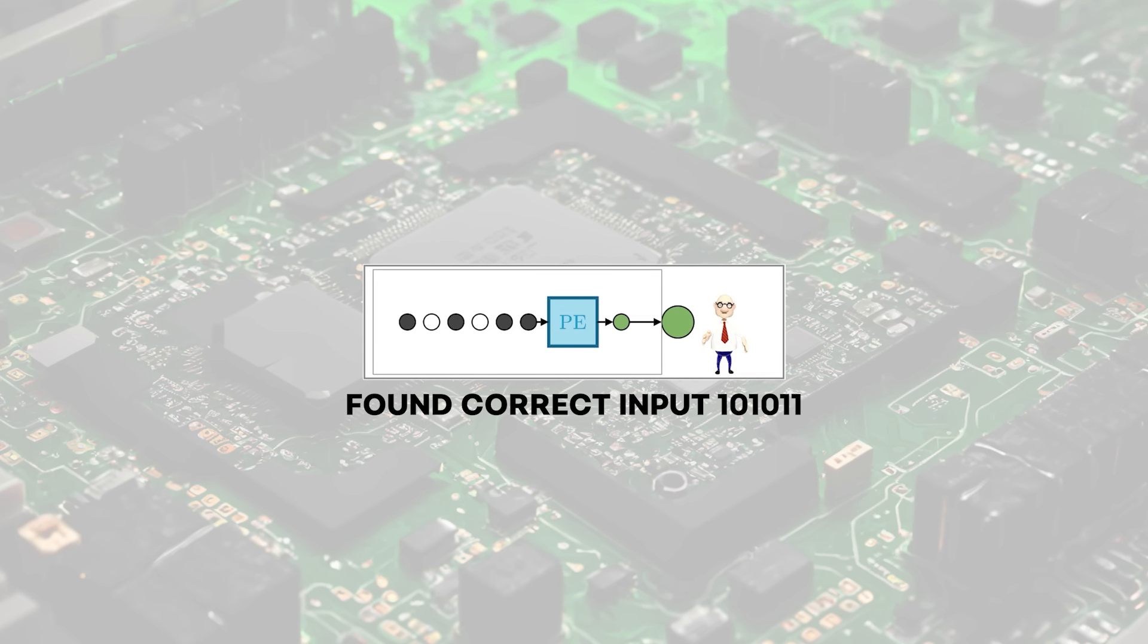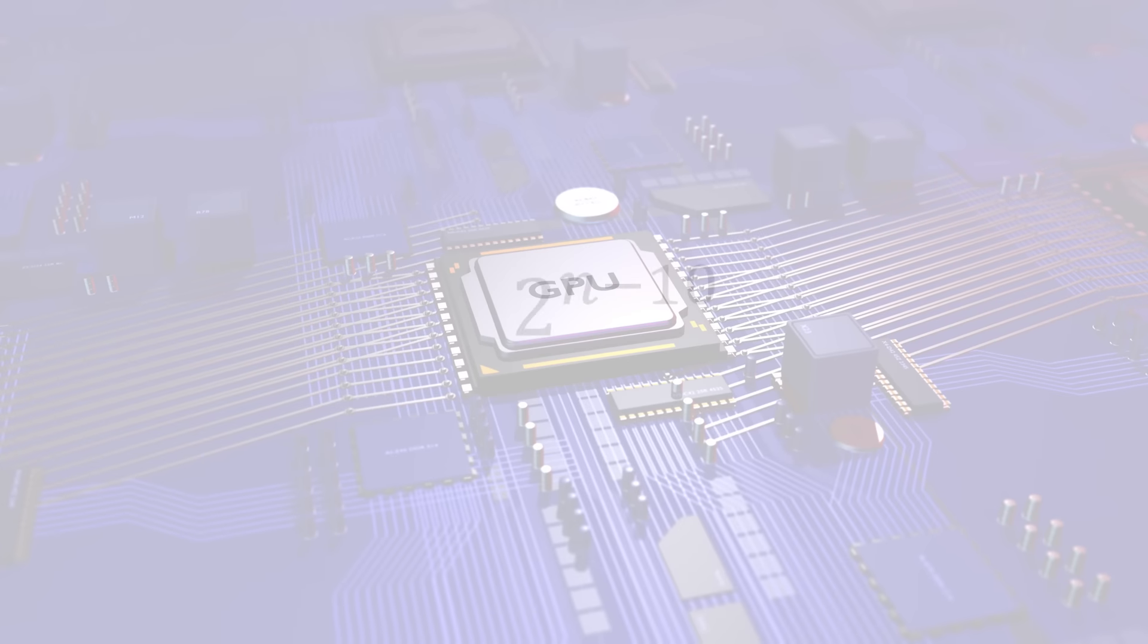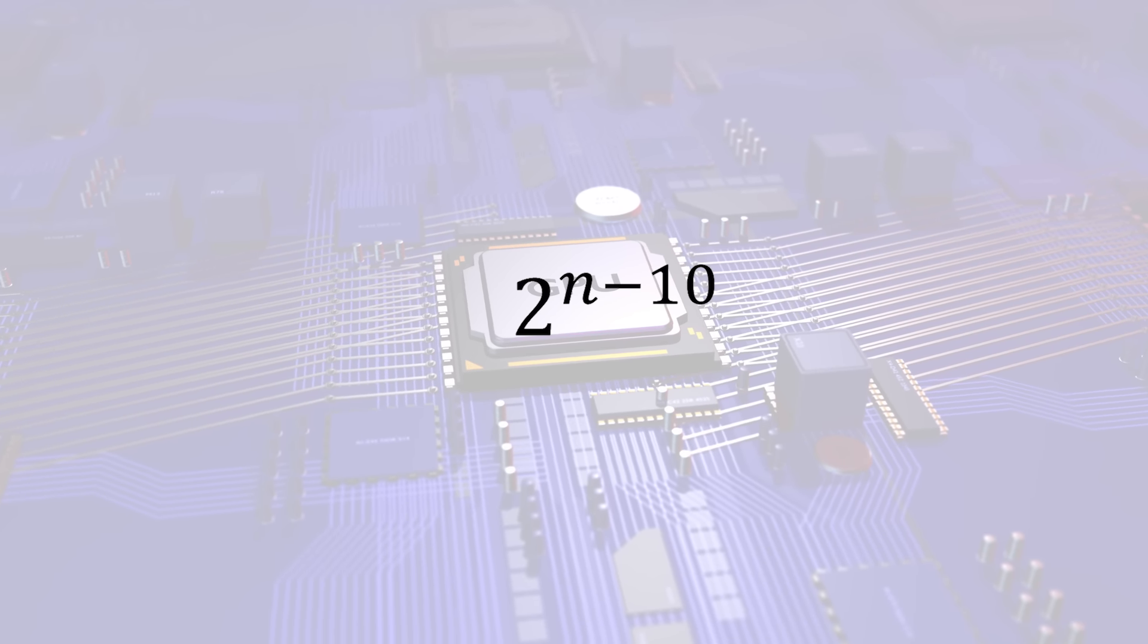This needs to sequentially try out all the 2 to the n input combinations until it finds a pass. For large n this is practically impossible. If you have a GPU that is a thousand times faster, it only reduces to 2 to the n minus 10.